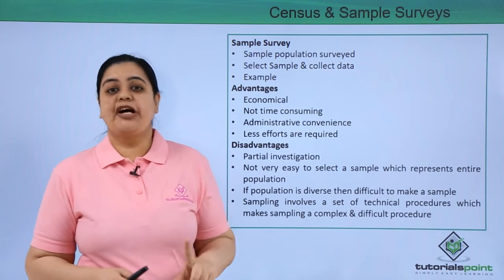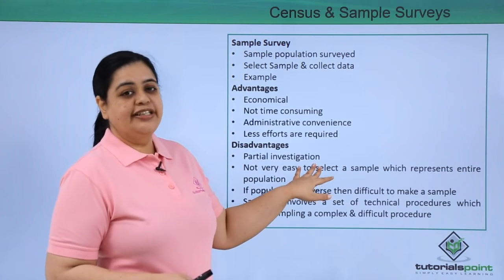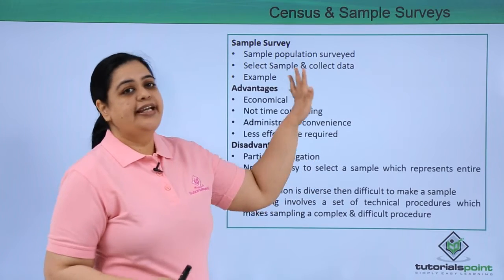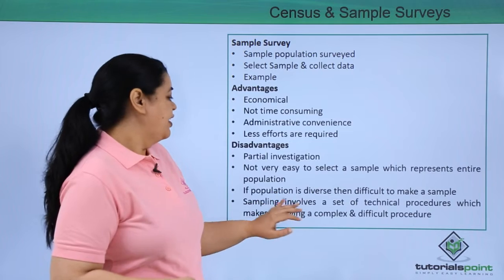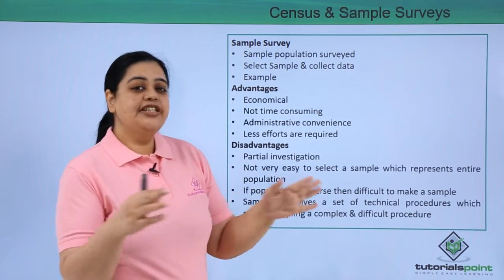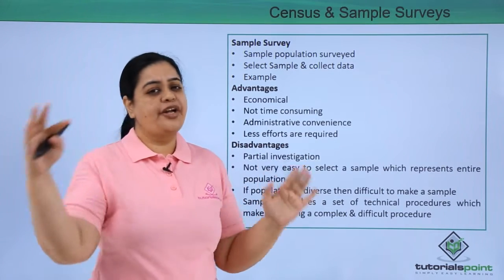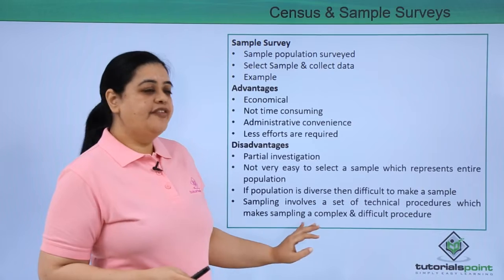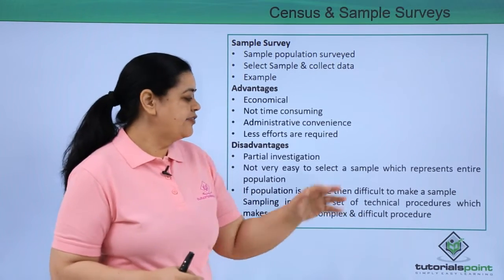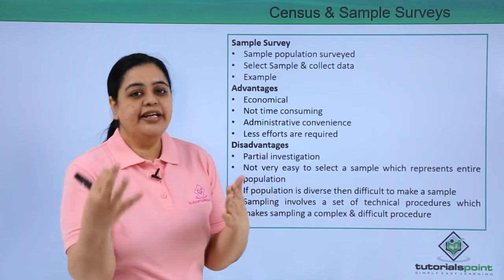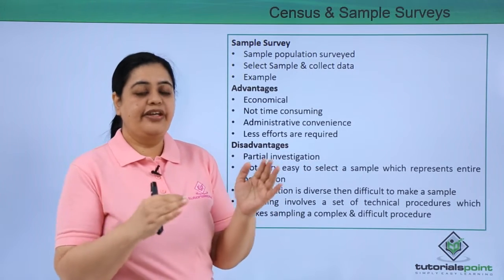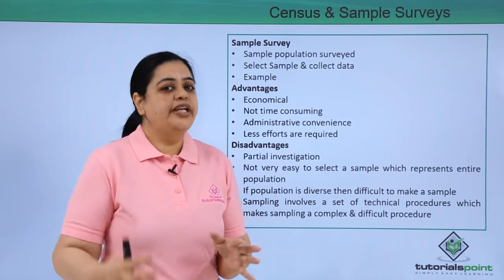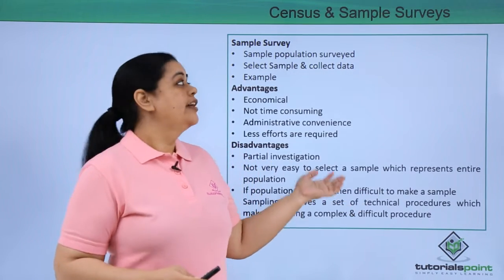The disadvantage of sample survey is that you are doing a partial investigation. If the sample selected does not represent the entire population, the results of the survey would be incorrect. Another problem arises when the population is very diverse — making a representative sample becomes very difficult. Additionally, sampling involves a set of technical procedures that make it a complex and difficult exercise, and only very experienced statisticians can conduct this kind of survey.